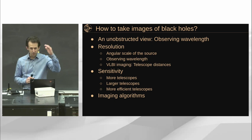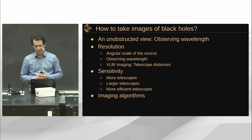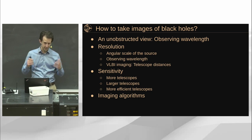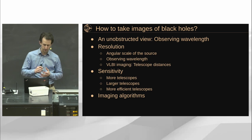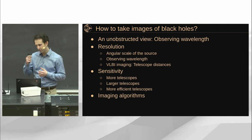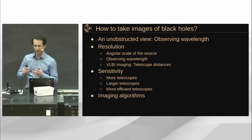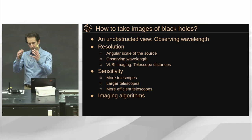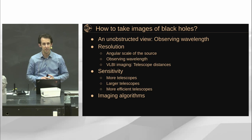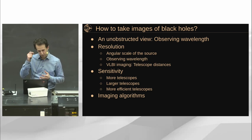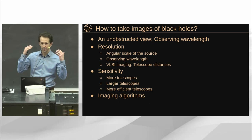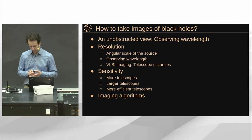Even with all of those things, the technique relies on very clever algorithms that make sense of what we call very sparse data. The measurements we take are not very direct — they're very different from a smartphone picture. We take very abstract data sets that have to be analyzed with sophisticated algorithms to come up with an image that is consistent with that data set. There is a lot of brain power involved. It's not just big telescopes and a lot of data — it's also ingenuity and human creativity.